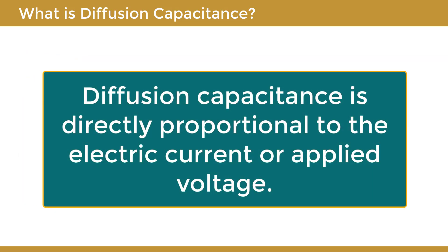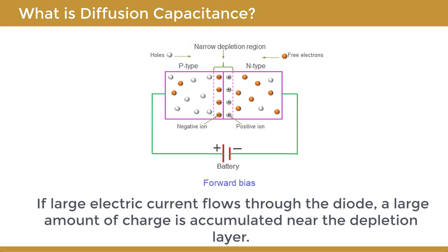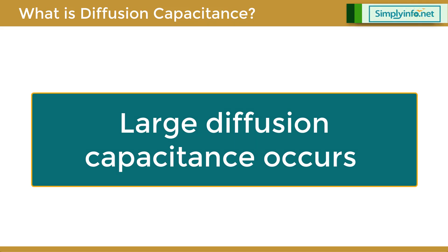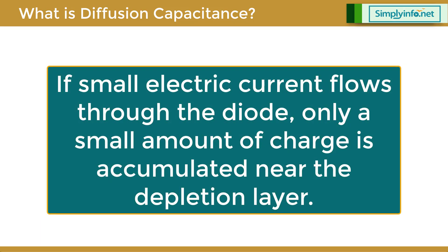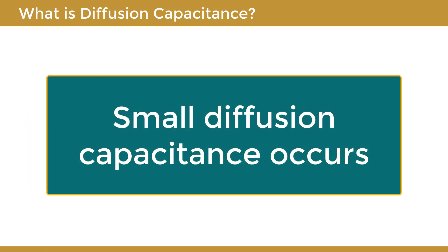Diffusion capacitance is directly proportional to the electric current or applied voltage. If a large electric current flows through the diode, a large amount of charge is accumulated near the depletion layer, resulting in large diffusion capacitance. In a similar way, if small electric current flows through the diode, only a small amount of charge is accumulated near the depletion layer, resulting in small diffusion capacitance.